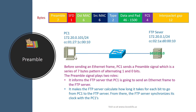The preamble signal plays two roles. First, it informs the FTP server that PC1 is going to send an Ethernet frame. Second, it allows the FTP server to calculate how long it takes for each bit to travel from PC1 to the FTP server, so the FTP server can synchronize its clock with PC1.